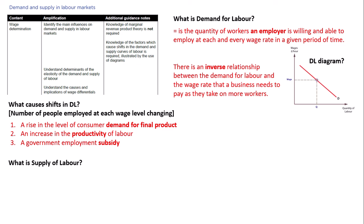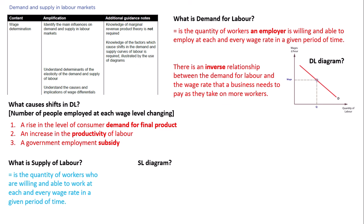What about the supply of labour? Pause the video and define that. Hopefully you've got something along the lines of that — the key thing to note is the supply of labour comes from employees; it is the workers who supply themselves to work. Can you draw the diagram? In this case the supply curve is upward sloping, just like a normal product supply curve. Make sure the axes are labelled correctly.